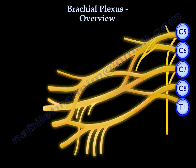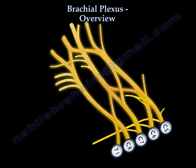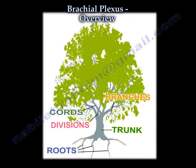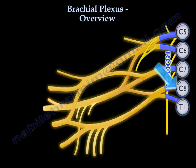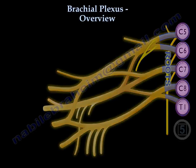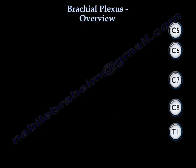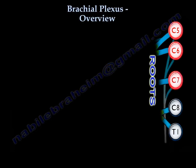The brachial plexus is like a tree that has roots, trunks, and divisions. We start with the basics. You have five roots, starting from C5 to T1: C5, C6, C7, C8, and T1.